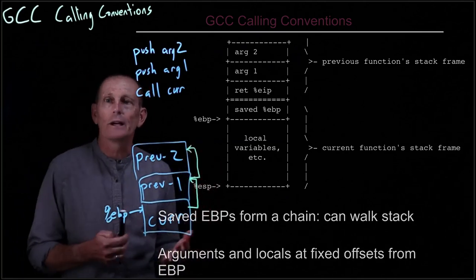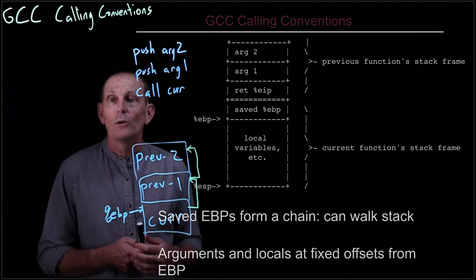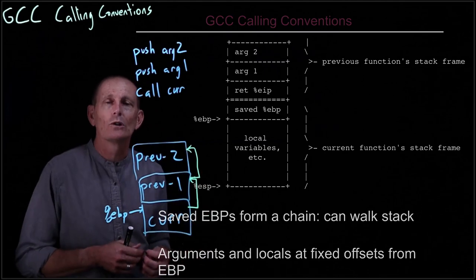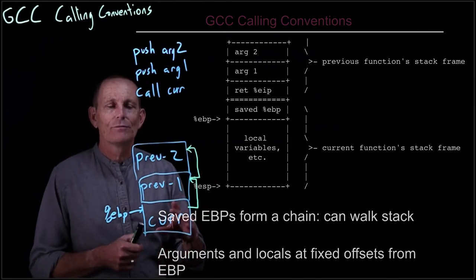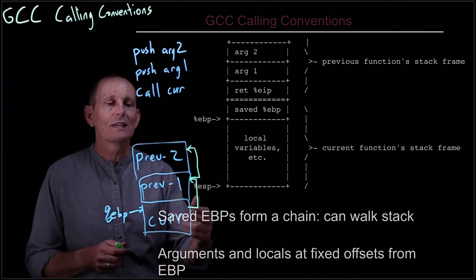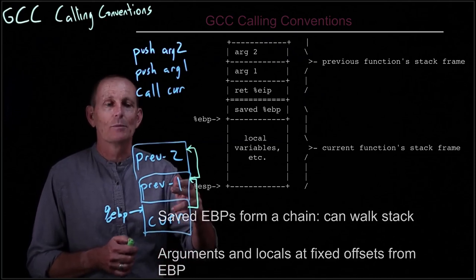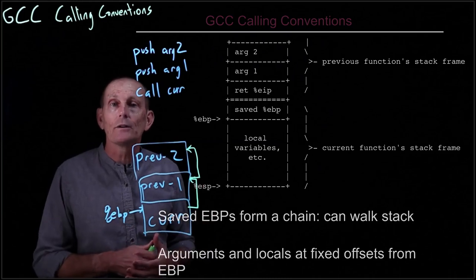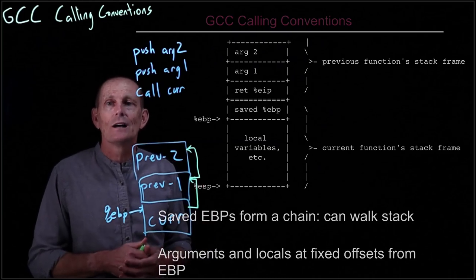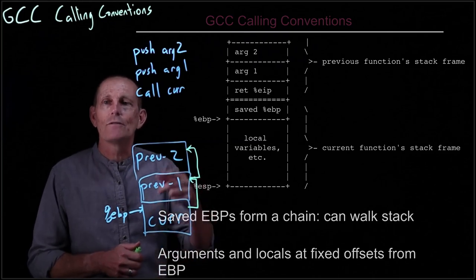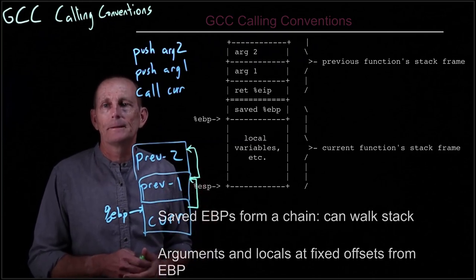Why do we care about this? In C, we don't care, because in C we can't access any but our own parameters and our own local variables. So we can't go in and access the local variables of PREV-1 or PREV-2 and so on. But in other languages like Python we can, for instance. So that is a reason why we have this chain of EBPs.